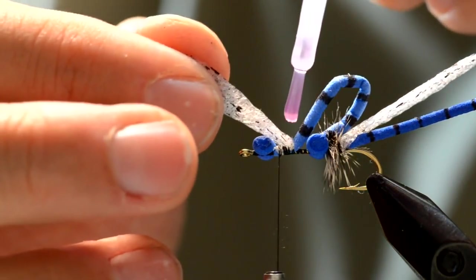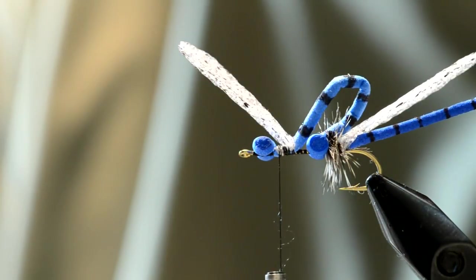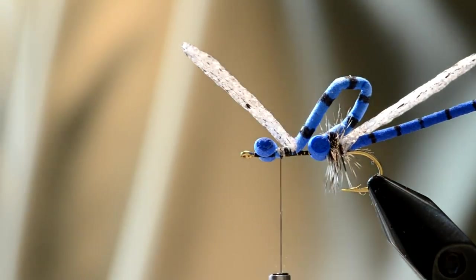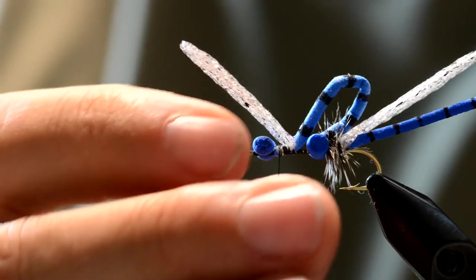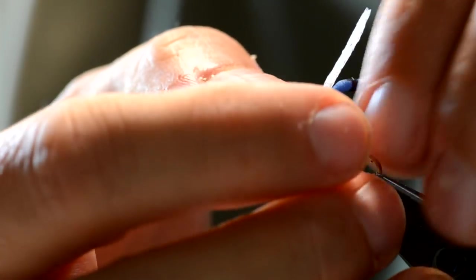Now sometimes in order to get this front wing to lie down a little better, I don't want it sticking straight up, I'm just going to put a little tiny bit of super glue in that joint and then push that back.